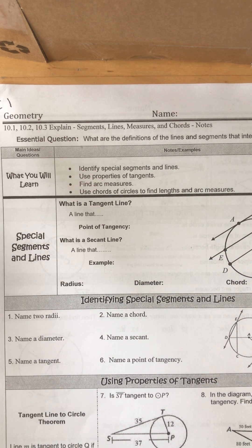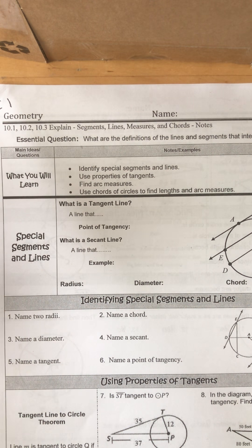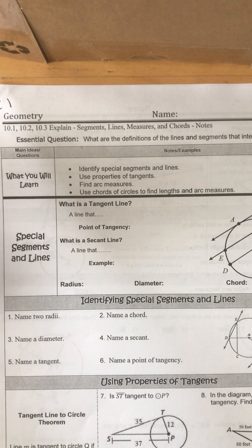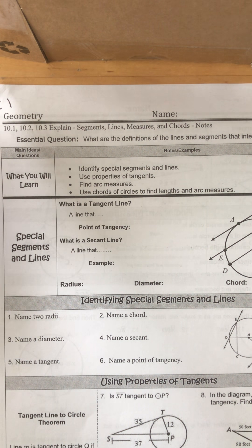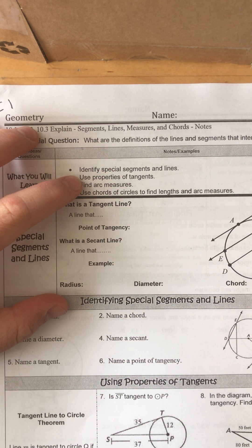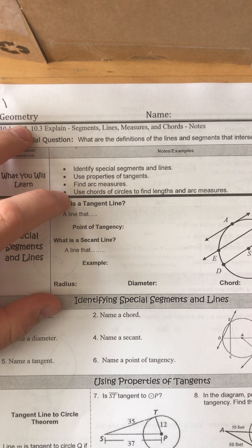All right, ladies and gentlemen, here we go. We're continuing on with notes on circles. Today we're going to be talking about segments, lines, chords, tangent lines — a bunch of lines and segments in circles. We're also going to be talking about central angle measures and then arc measures. And again, that's measure, not length.